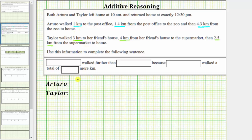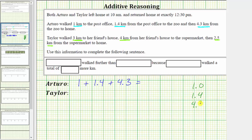Arturo walked a total of one kilometer plus 1.4 kilometers plus 4.3 kilometers. To determine this sum, let's write the sum vertically and line up the corresponding place values. Because these two numbers have the tenths place value, or one decimal place, let's write one as 1.0. We would have 1.0 plus 1.4 plus 4.3.